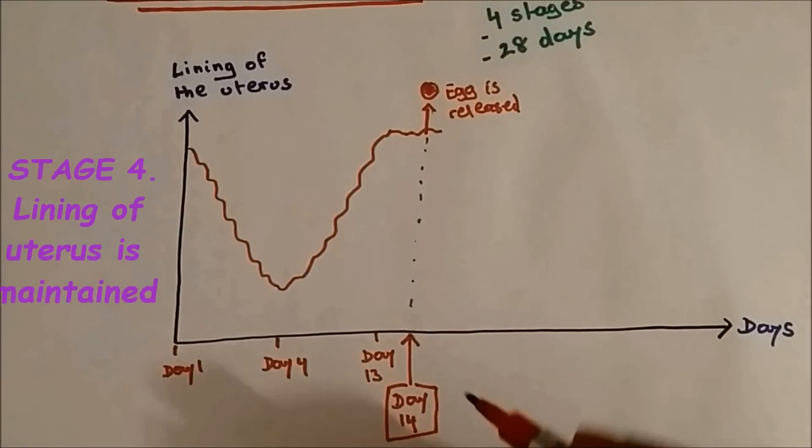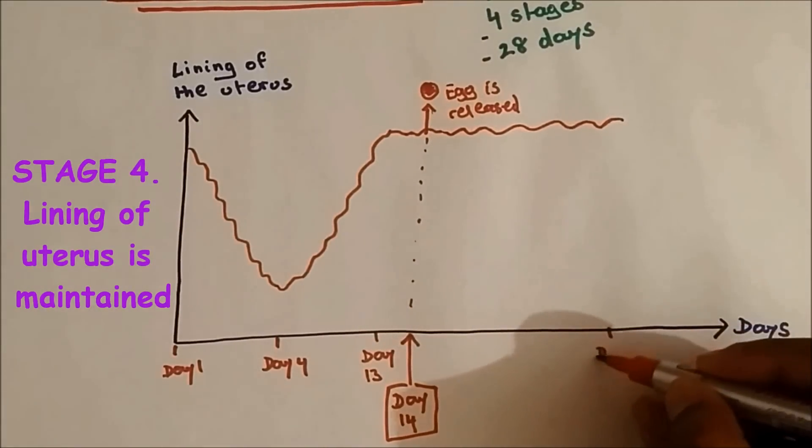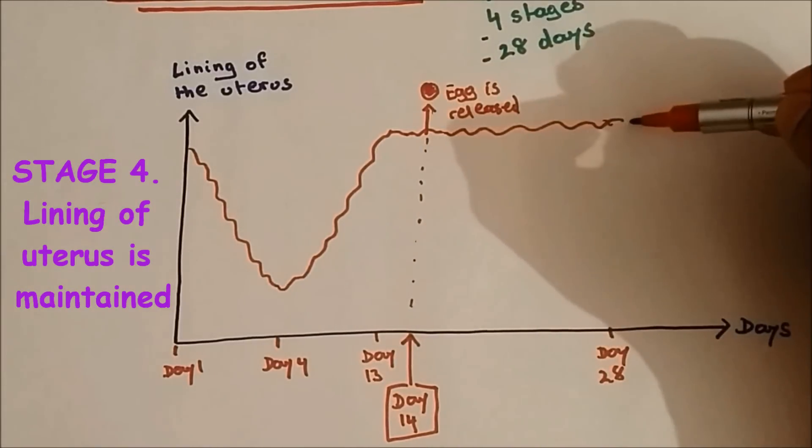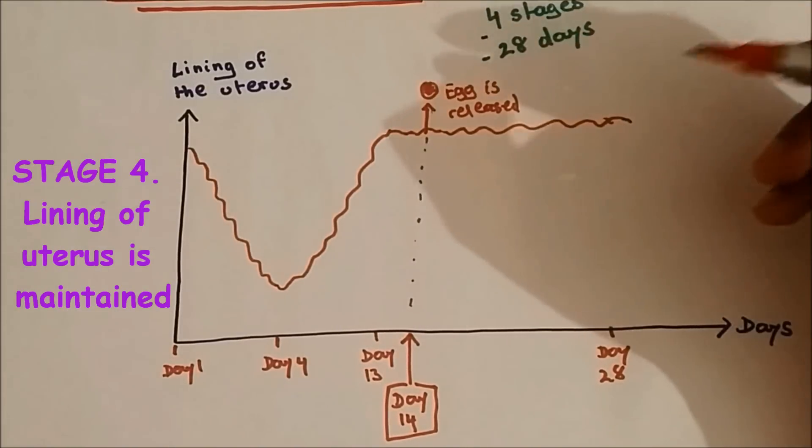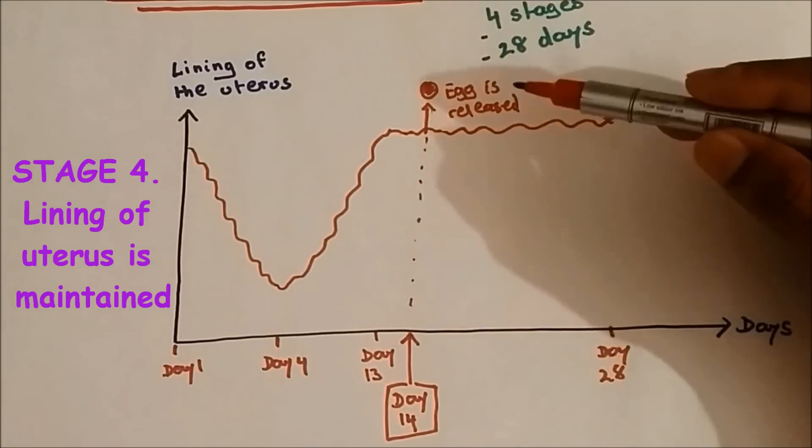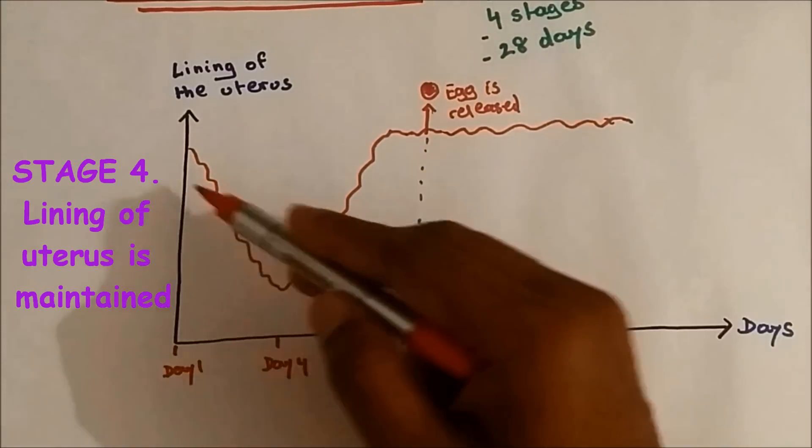And then from day 14 to day 28, the lining of the uterus is maintained. And if the egg is not fertilized between these 14 days, the cycle starts again, which means the lining of the uterus breaks down.